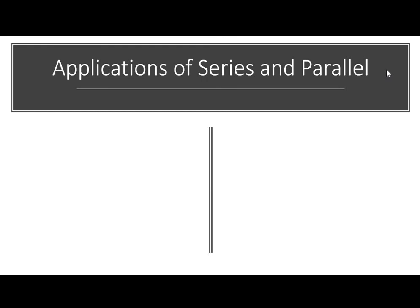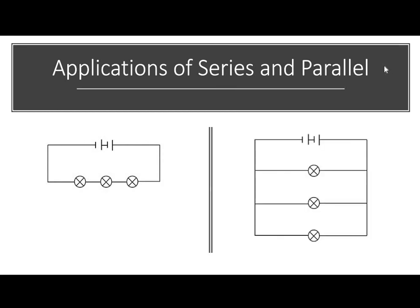Now let's think about applications of series and parallel circuits. Look at these two circuits and think about what would happen to the brightness of the lamps if another lamp was added. In the series circuit, adding another lamp would cause a decrease in brightness, because there would be an increase in resistance in the circuit.